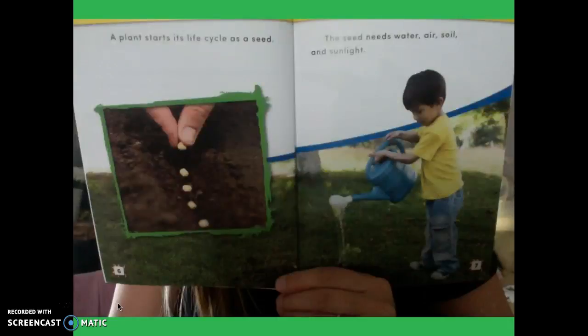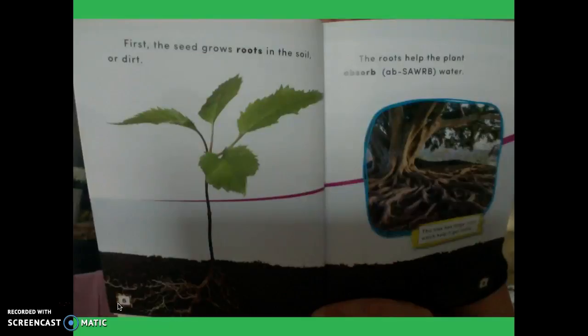A plant starts its life cycle as a seed. The seed needs water, air, soil, and sunlight. First, the seed grows roots in the soil or dirt. The roots help the plant absorb water.